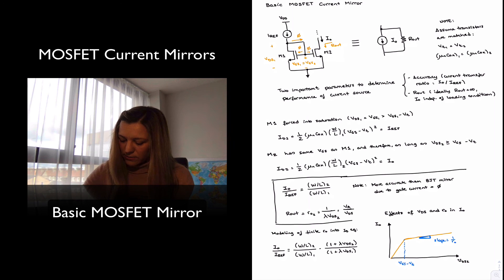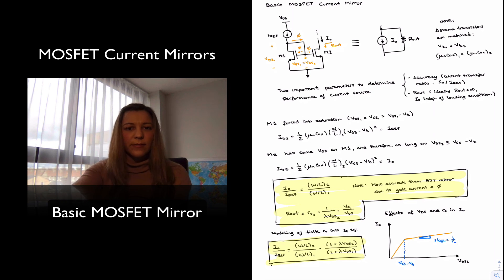So I'm going to encircle that. As a result, I think the note is fairly important as well. So I'm encircling it as well. And then obviously this is a more accurate expression for the transfer ratio. And that's it. That's the basic MOSFET current mirror. Thank you.